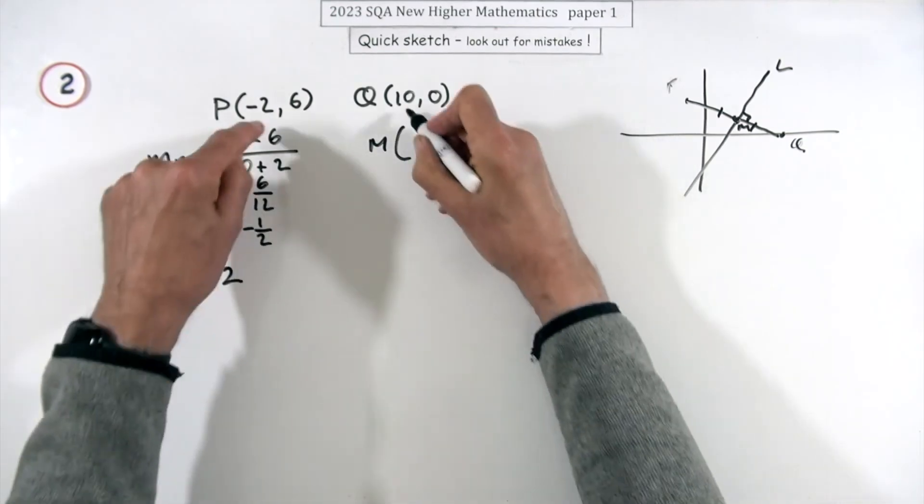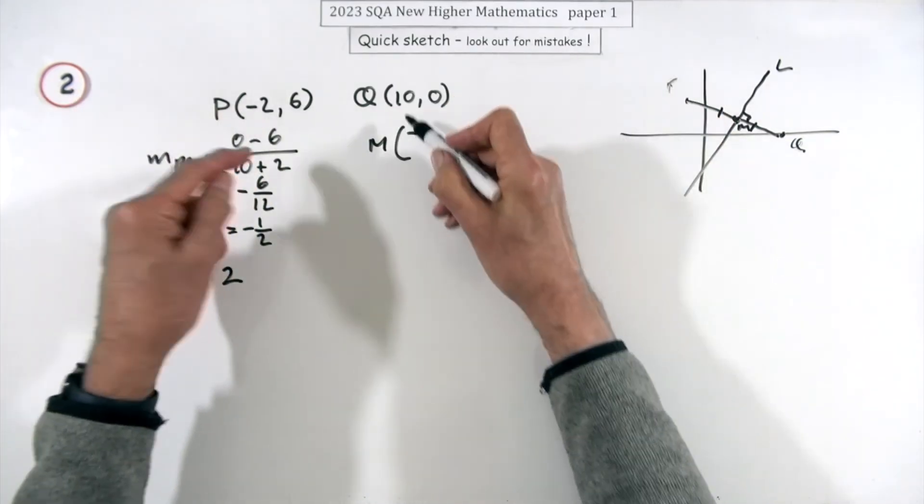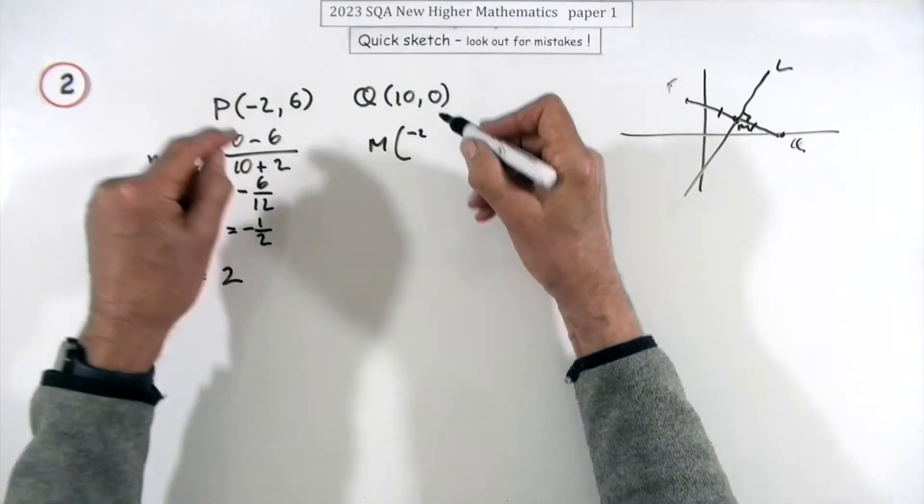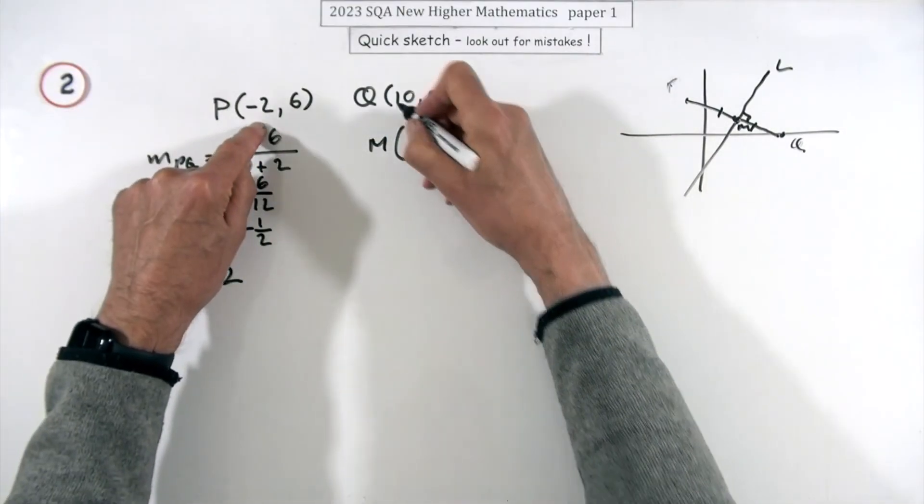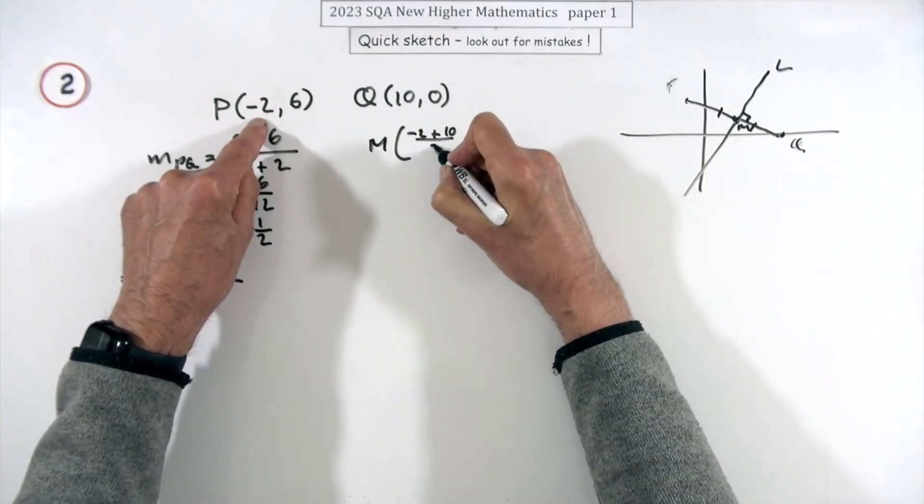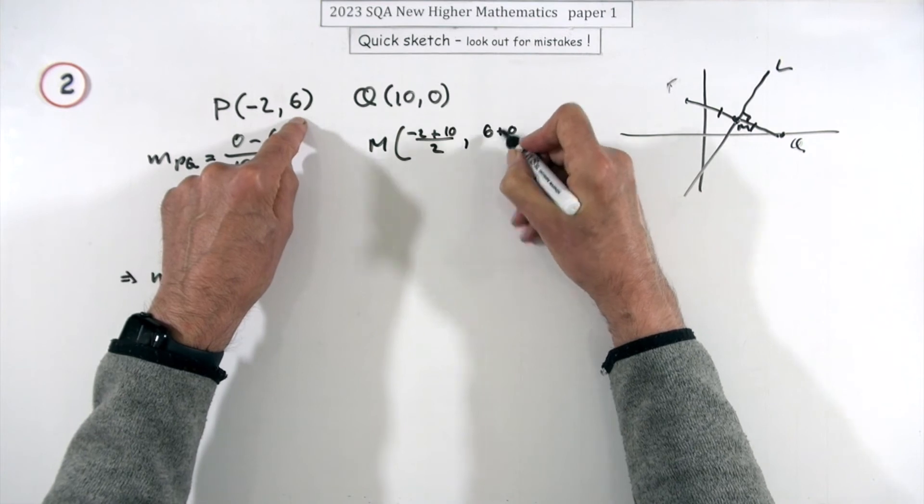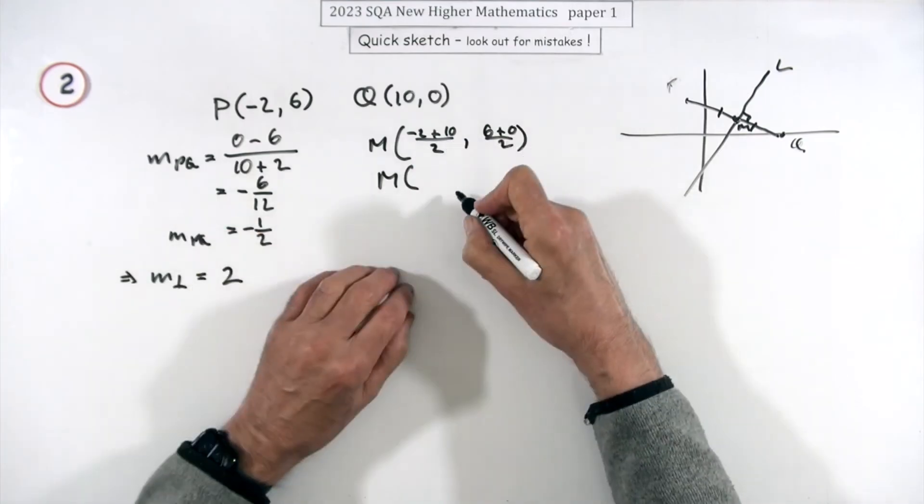Now the other thing I'll need is the midpoint, average of the coordinates. Negative, you could go straight in with it. I mean you could do all sorts of things, you could just do in your head, or you could say they're 12 apart so go back six, that makes it four. But I've wasted all that time, right okay. Plus the 10 over the 2, and then 6 plus 0 upon 2, halfway.